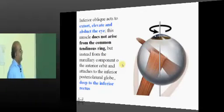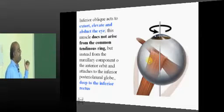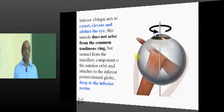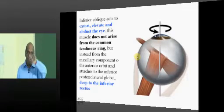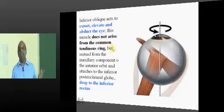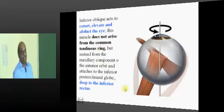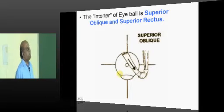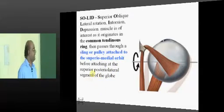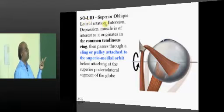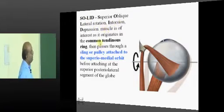Inferior oblique, it will extort, elevate and abduct the eye. And another important thing about inferior oblique which you need to remember is there is one annular tendinous ring from where all extraocular muscles take origin. Inferior oblique is an exception that it does not arise from this common tendinous ring. Now who is the intorter of the eye? It is the superior oblique and superior rectus which act like the intorters of the eye. Another way to remember this is you can remember SOLID: superior oblique will cause LID, lateral rotation, intorsion and depression.